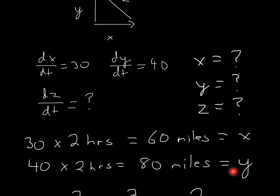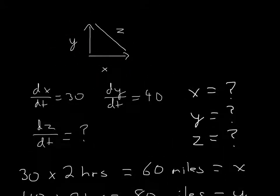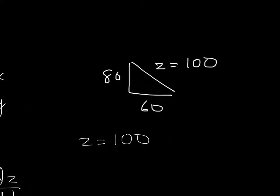So that's all I wrote here. I wrote 30 times two hours is 60 miles. 40 times two hours equals 80 miles. So now we have two of these. We have X and Y. But now we still need Z and dz/dt. So what can we do with these two numbers? If we look at it, X is 60 and Y is 80. What do we have when it comes to solving triangles that we can find Z? We could do sine or cosine or tangent, but we don't have an angle, so we can't do that. But what we can do is Pythagorean theorem because it's a right angle.